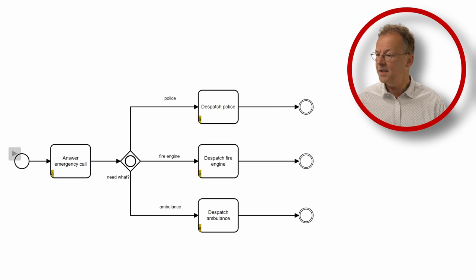So answer emergency call. After that, we ask the question, what do we need? And in this case, we choose police and ambulance and not fire engine. And then we go to dispatch police and dispatch ambulance.